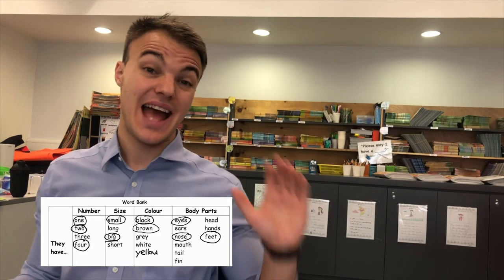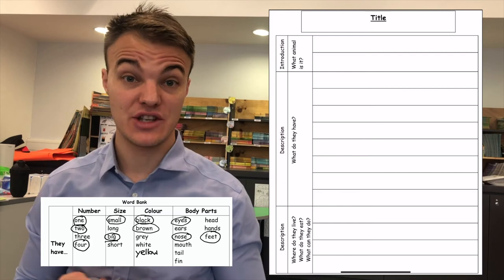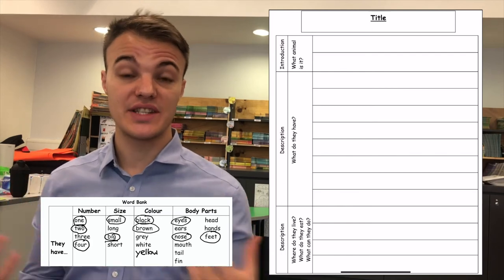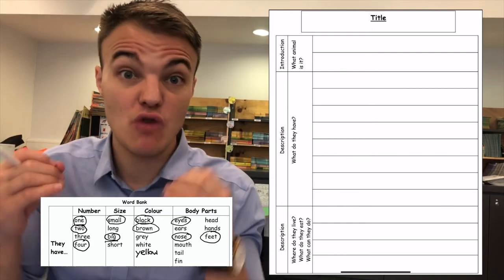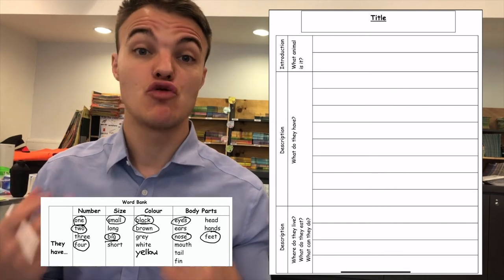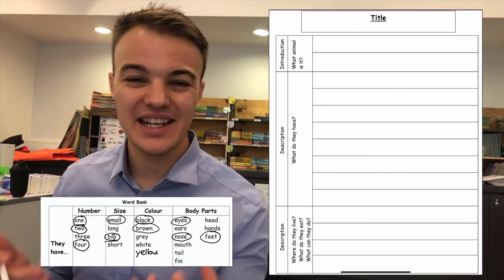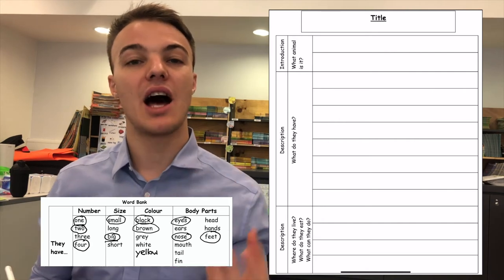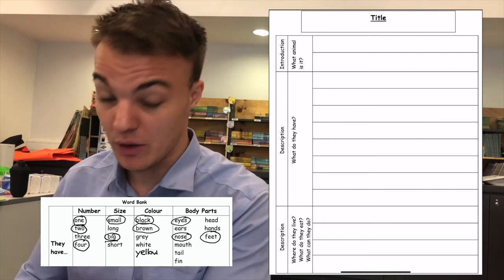Now I can start writing. I am drafting my writing now. I can see my word bank and I can see my writing page. First I need to write the title. Today we are writing about an animal, so we are writing a report. The title is my lion report. So I am going to write that now.